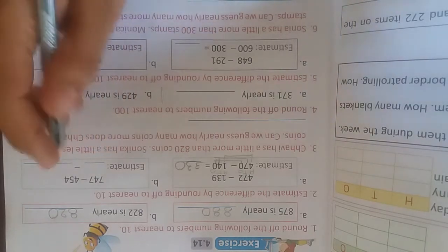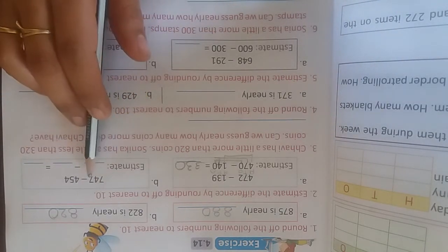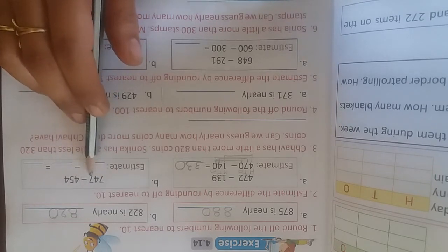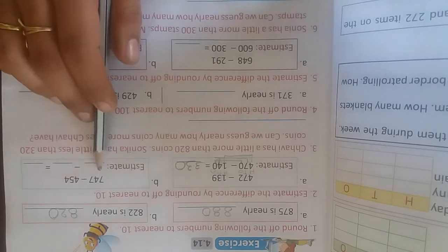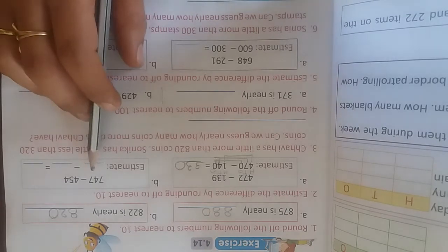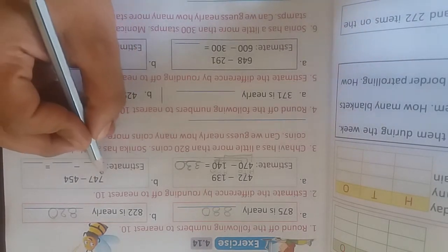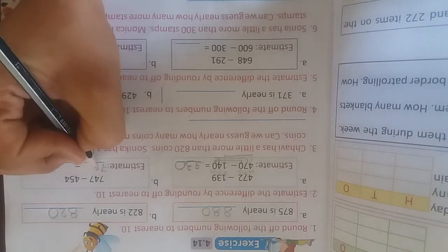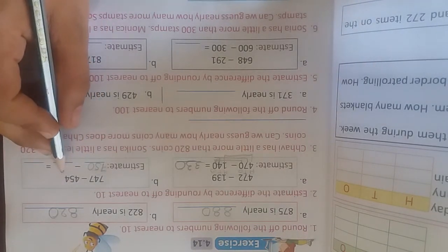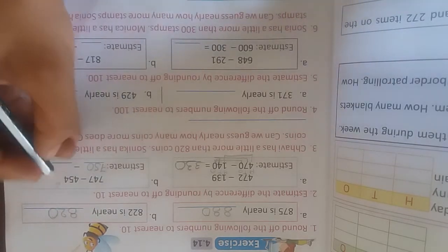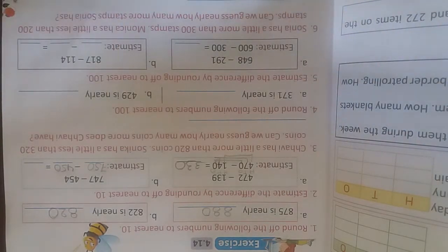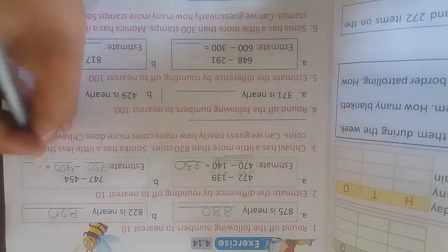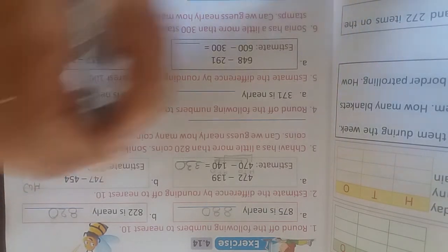Let's solve the second one: 747 minus 454. We'll round off to nearest 10. 747 rounds to 750, as 50 is the nearest round off. 454 rounds to 450, because 50 is nearer than 60. The estimated expression is 750 minus 450. This is your homework — you're going to solve it at home by yourself.